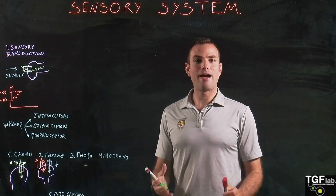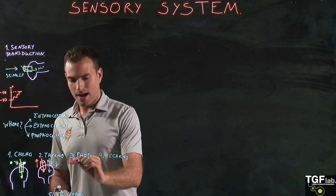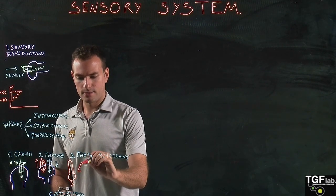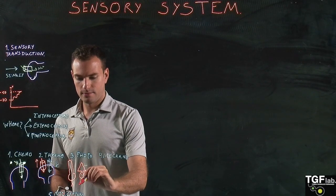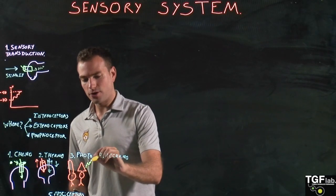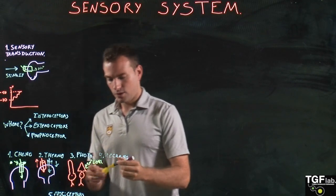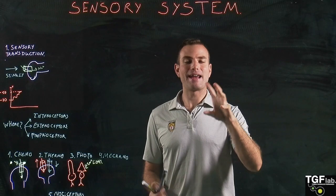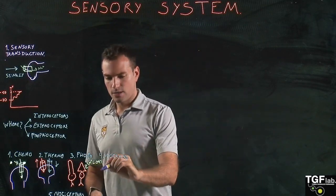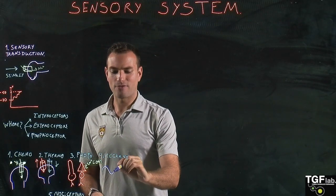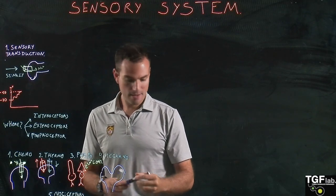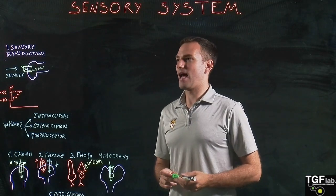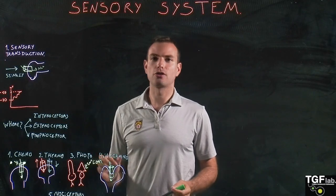For photoreceptors, we only have two types: cones and rods. The rods and cones are located in the eyes and are activated by photons — we will look at this in more depth when we cover vision. Finally, mechanoreceptors are activated by a difference in the stretch of the receptor membrane. When someone touches or hits us, that stretches the receptor membrane, which activates an ion channel and originates the sensory transduction — the graded potential that then triggers the action potential.